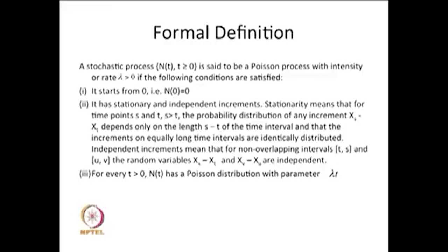So the Poisson logic comes into the third condition. The first condition is N(0) = 0; increments are stationary and increments are independent. The third condition: for fixed t, N(t) is a Poisson distributed random variable with parameter λt. Therefore, this stochastic process is called a Poisson process. We have taken care of these three assumptions — starting at 0, increments are stationary, and increments are independent, meaning non-overlapping intervals are independent. When we derive, we get that N(t) is a Poisson distributed random variable, so this is a Poisson process.